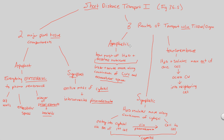So those are our three routes: apoplastic, symplastic, and transmembrane, utilizing these different tissue compartments. We'll continue our discussion on short distance transport in the next flowchart.